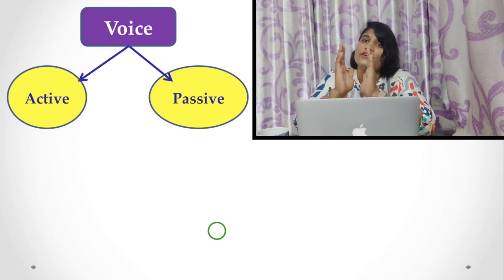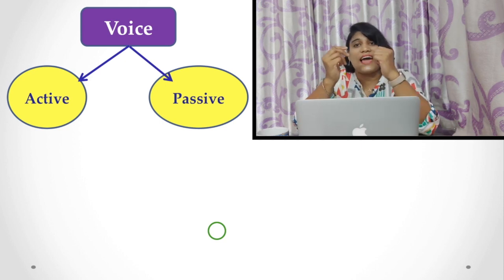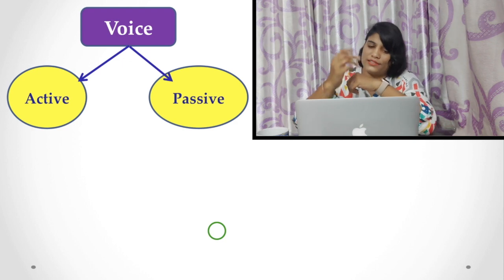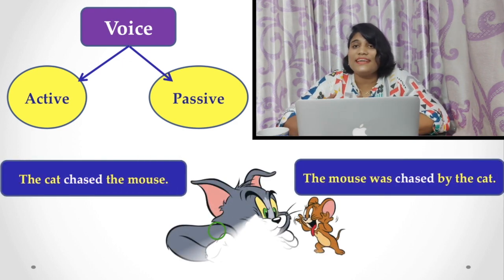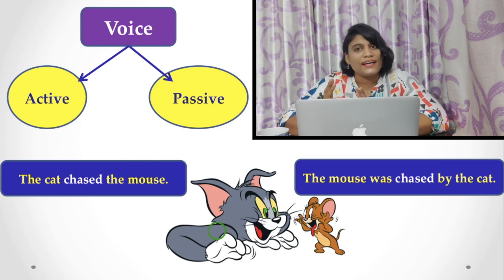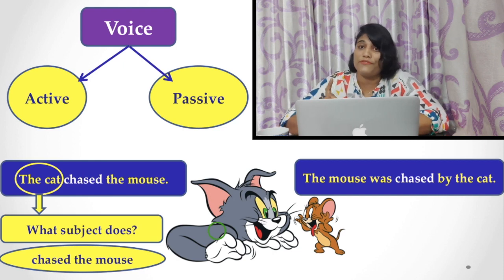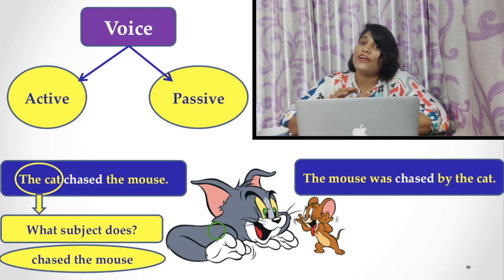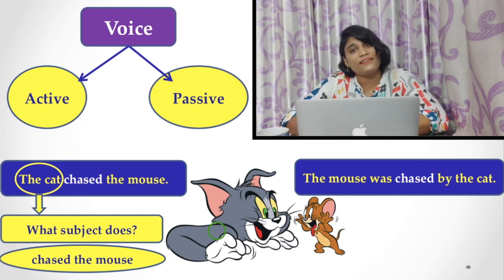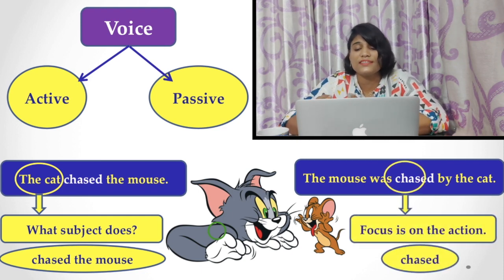Voice is of two types. The active voice and the passive voice. See the example first. The cat chased the mouse. The mouse was chased by the cat. In the first example, you find what the subject does is stated very clearly — that is, chase the mouse. But in the second sentence, the focus is on the verb, that is, 'chased.'